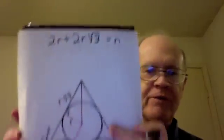n equals 2r plus 2r times the square root of 3.